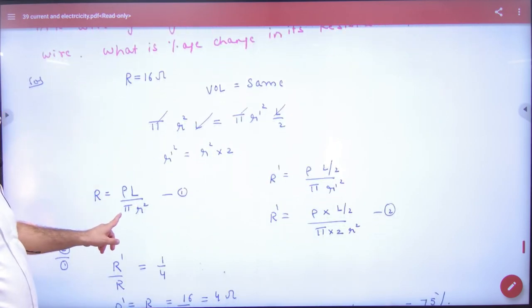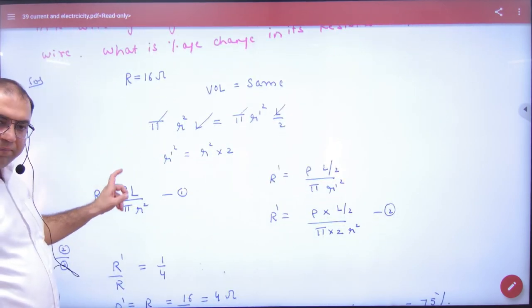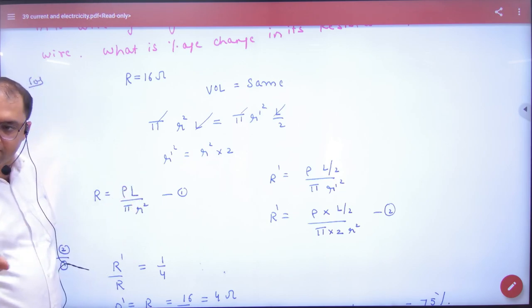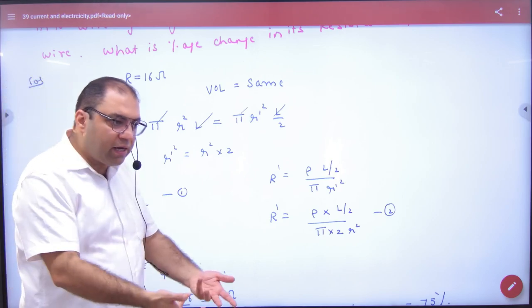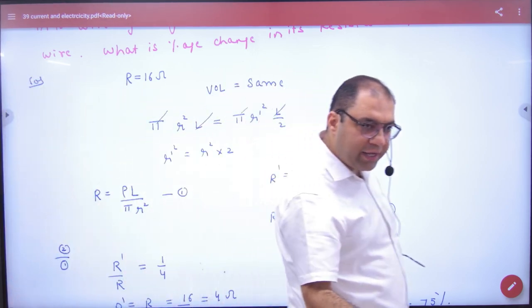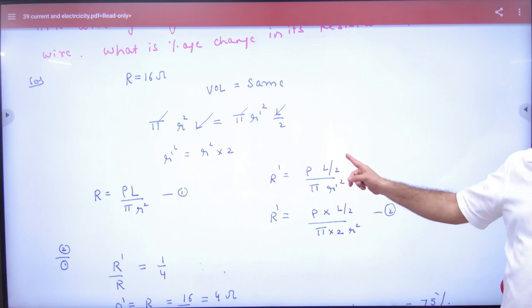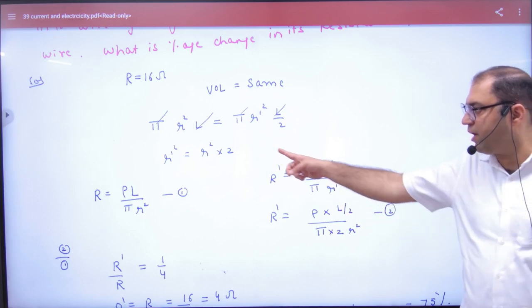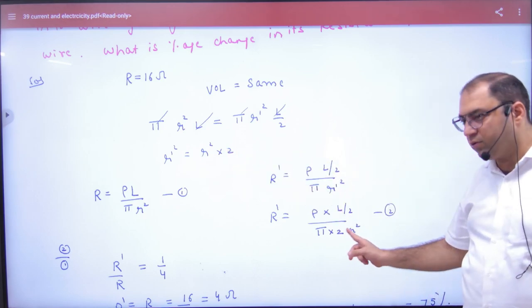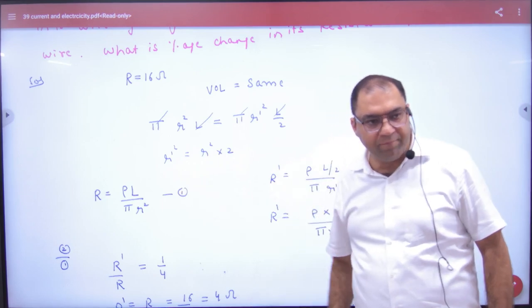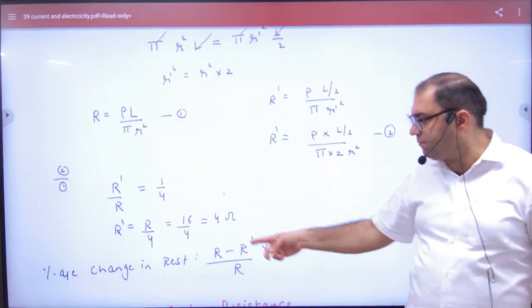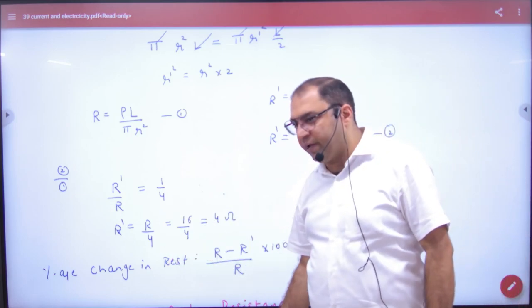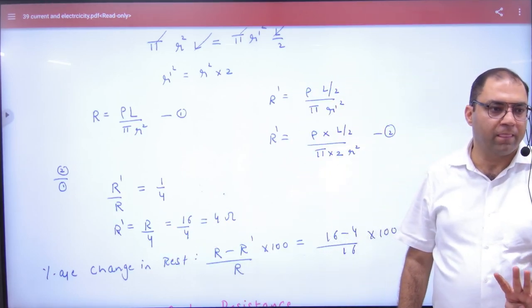So resistance before melting was ρL by cross section area, πR². Right? And resistance after melting, the new resistance, its length is L/2. And radius is R dash. But R dash square, we have calculated, 2 into R². If you divide this by this, all terms cancel, you'll have 1/4 remaining, so R dash ki value will be R/4. It will be 4 ohms. Right?